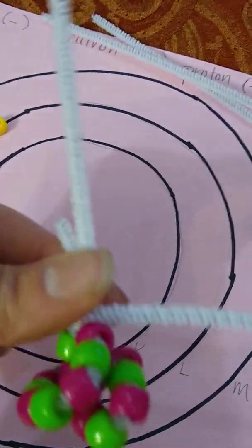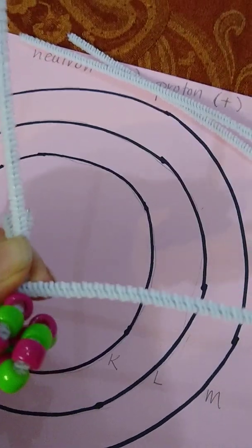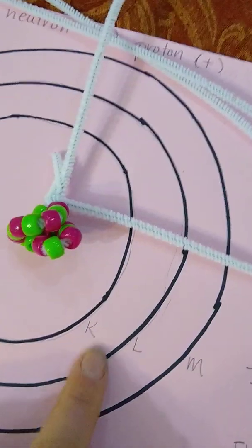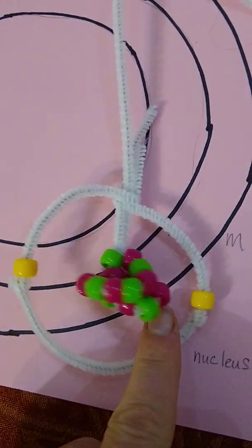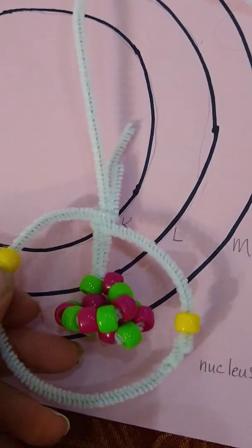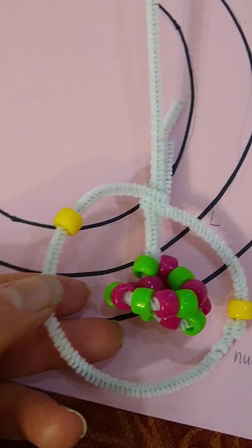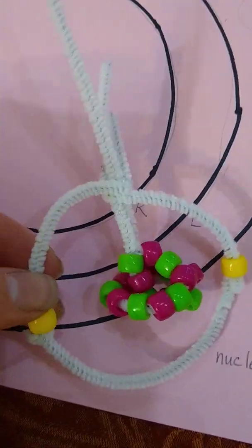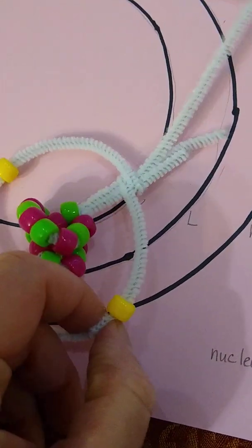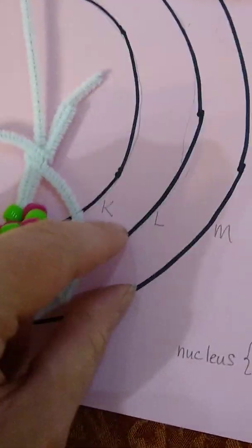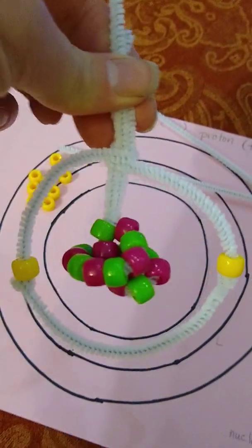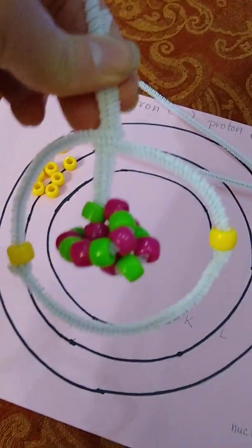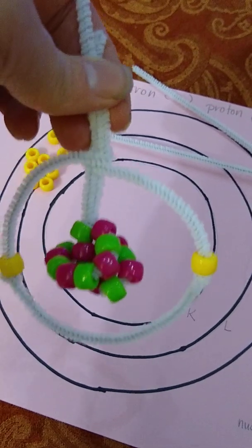I've twisted this one around the base, and this will represent the first shell or K. Here's my K shell—I've made a little knot so it sits on top, and I did that for both of these. There is my K shell with my nucleus of protons and neutrons, and two electrons.